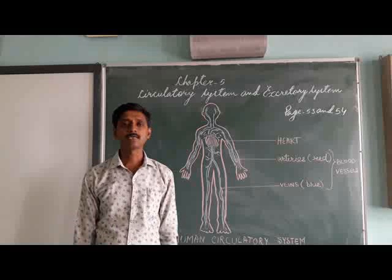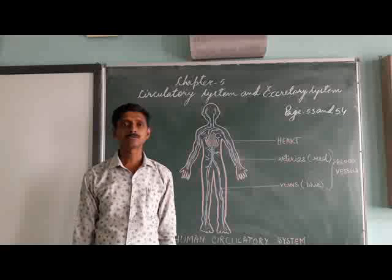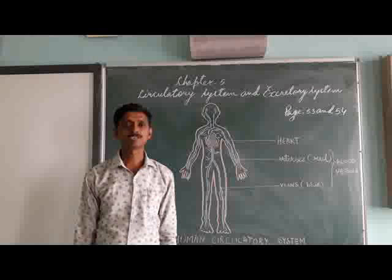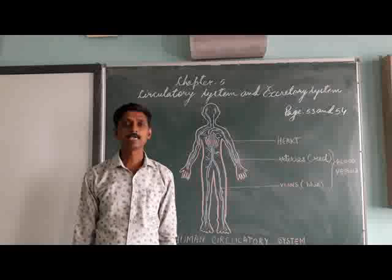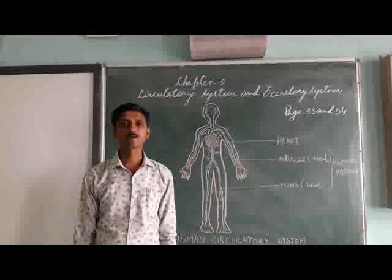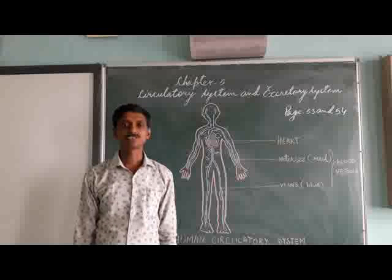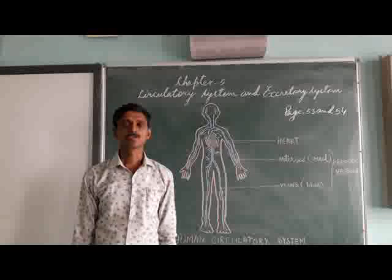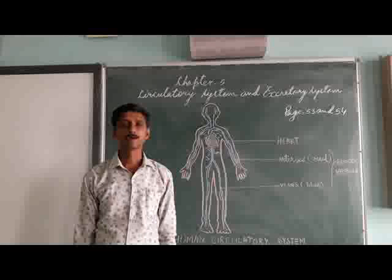The organ system that helps to transport substances to different parts of our body is called the circulatory system. The organ system that helps to remove waste from our body is called the excretory system. The circulatory system consists of blood, blood vessels, and the heart.